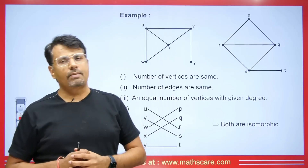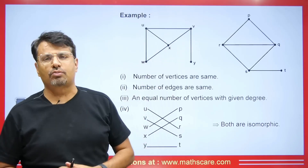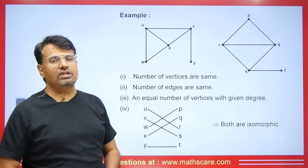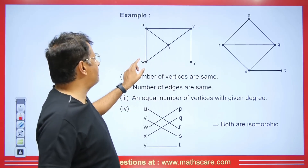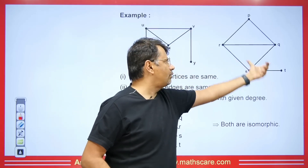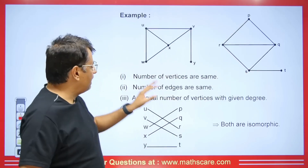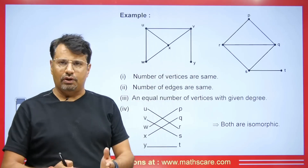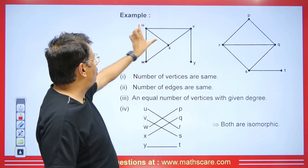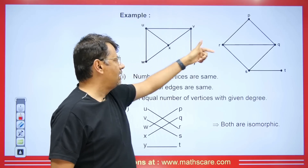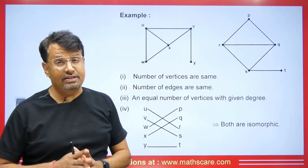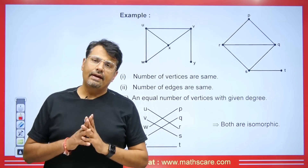Let's look at an example — see these two graphs and determine whether they are isomorphic or not. First, we check the number of vertices: here we have 1, 2, 3, 4, 5 — and here we also have 5 vertices. Now let's check the edges — they should be equal. Here we have 1, 2, 3, 4, 5, and 6 edges. Here also we have 1, 2, 3, 4, 5, and 6 — so 6 edges. The edges are equal.